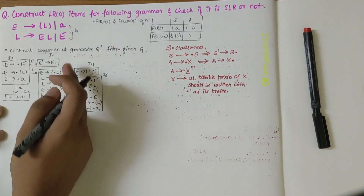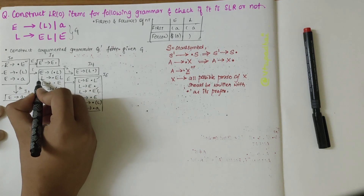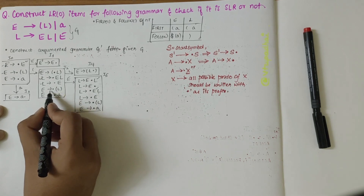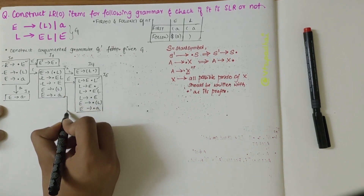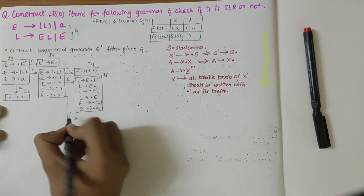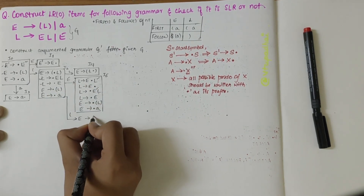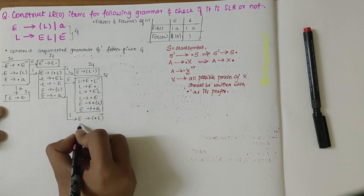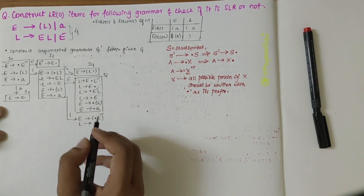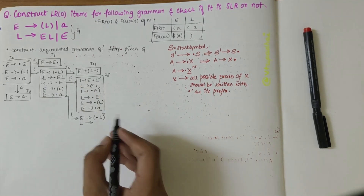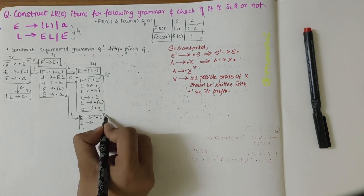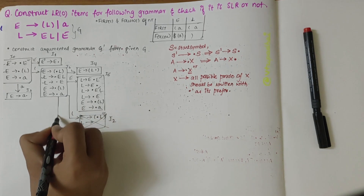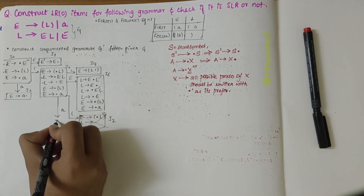Going back to I2, over open bracket I get the same expansion as I2 itself, so I write I2 there. Over A, I get I3 itself. I'm done with I2 productions.